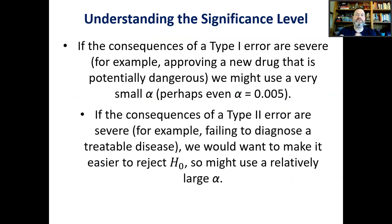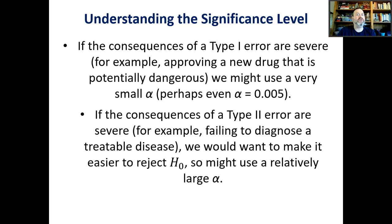If the consequences of a Type 1 error are severe — for example, approving a new drug that is potentially dangerous — we might use a very small alpha, maybe even 0.005. This is equivalent in our analogy to a first-degree murder trial: if the null hypothesis is to be rejected, it can only be done so with lots of evidence.